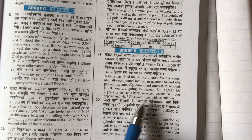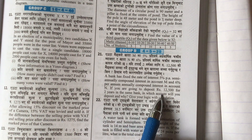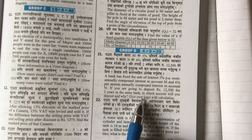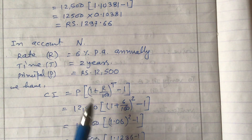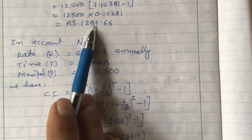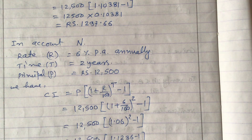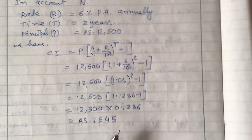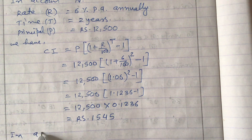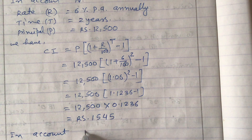We have completed the calculations. The question asks: in which account will you deposit and why? Give your logic with calculation. In account M we got rupees 1,297.66 interest, and in account N we got rupees 1,545. Comparing the two, account N gives more interest.